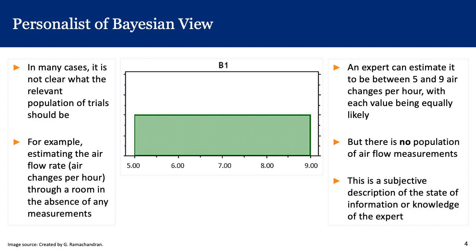Both views provide descriptions of probability that follow the laws of probability. In fact, the whole field of probability arose from the personalist view, and it's only later that the classical view began to dominate — until more recent years when the Bayesian approach has become more popular.